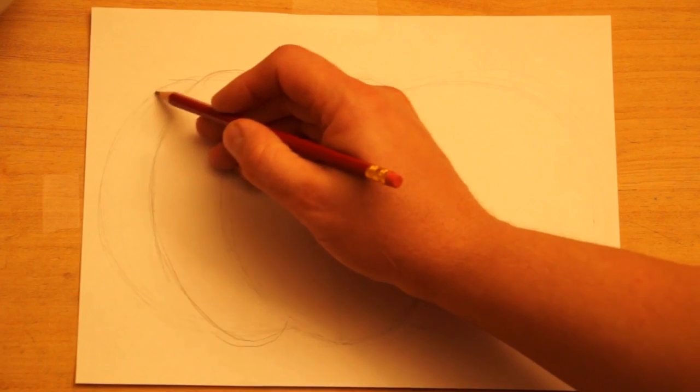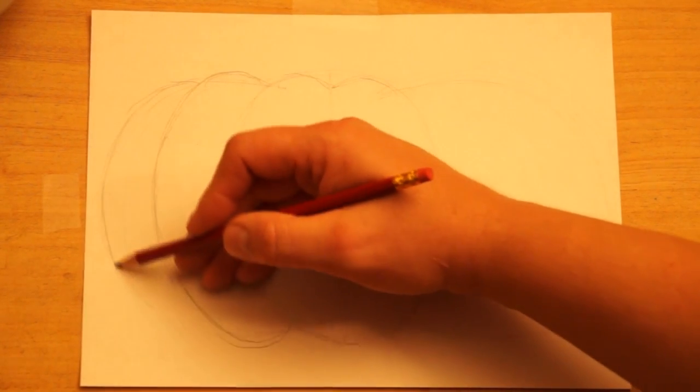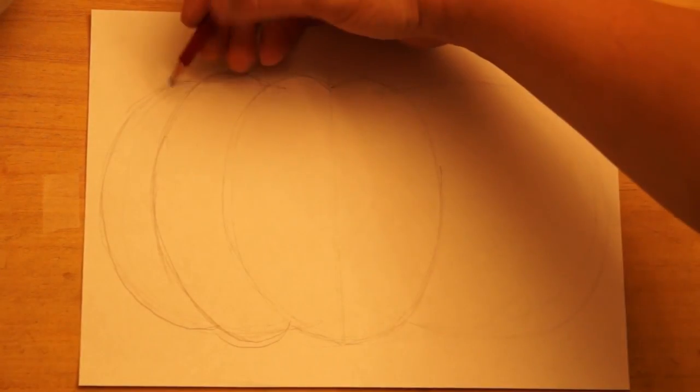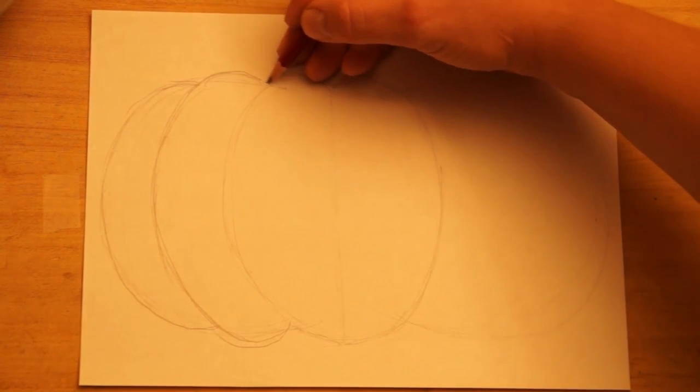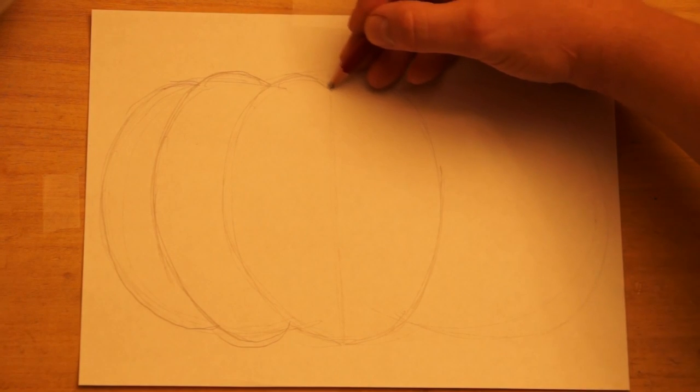And then the last part, I'll make a little bit of a bump here. And go around. Now, what I have here then is I've changed the contour. I've changed the outside edge by making these separate bumps for each segment, each section.